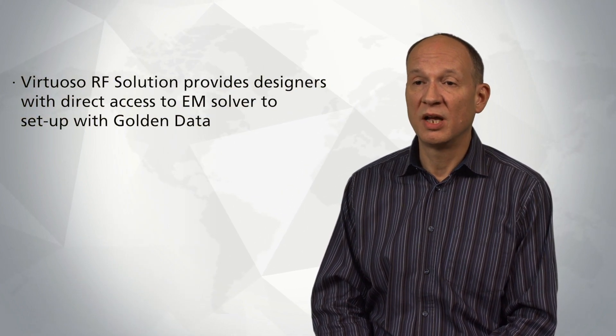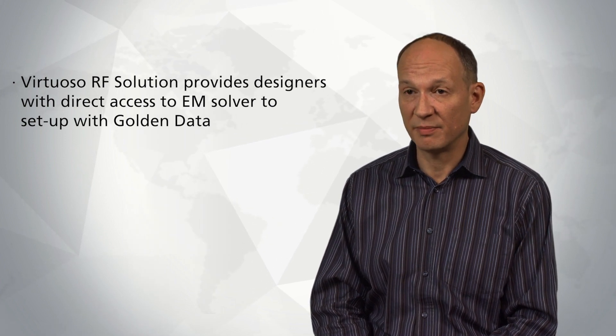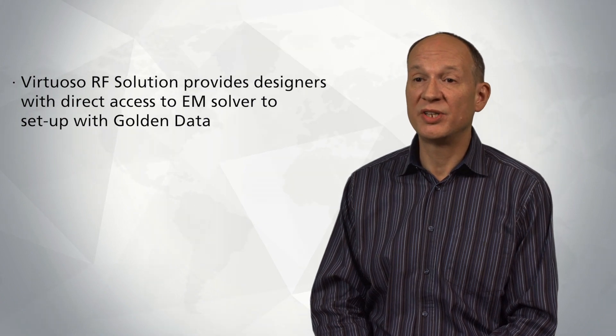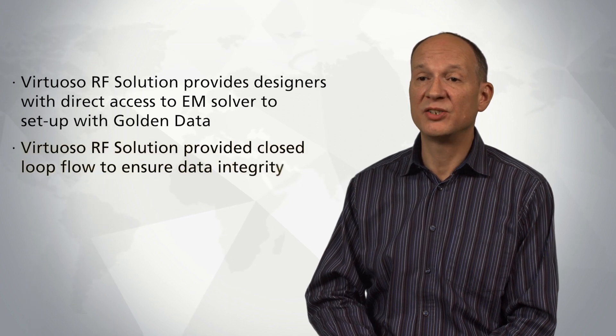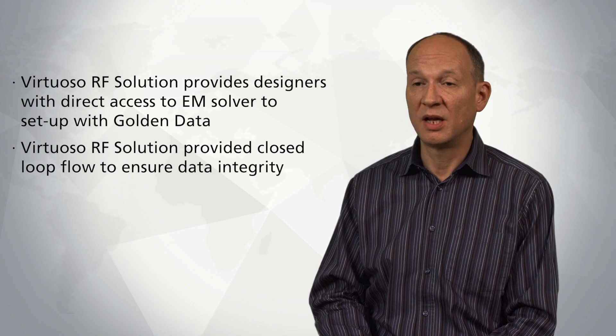Some of the additional benefits of integrating an EM analysis flow inside of the Virtuoso RF solution are that designers get direct access to electromagnetic solvers. Traditionally, this requires someone with additional expertise to ensure the data is transferred correctly and that the solvers are set up properly to ensure the correct results. With the Virtuoso RF solution, an environment is provided that allows the designer to do this setup directly from their golden data, which ensures that they're getting S-parameters that represent their design. It also ensures that the model they're simulating with the electromagnetic solver is in sync with their design and that the results are being sent directly to their golden schematic for circuit simulation, providing a closed-loop flow that ensures data integrity for their complex designs.